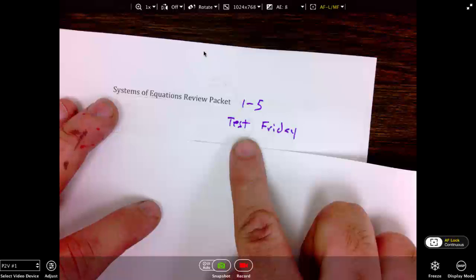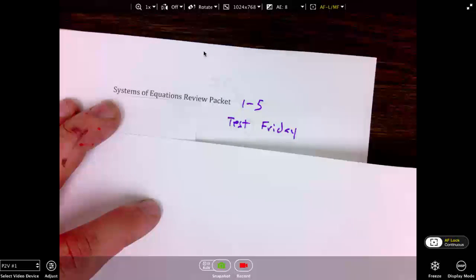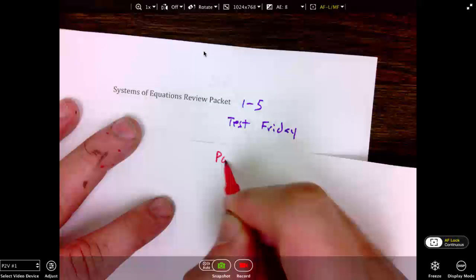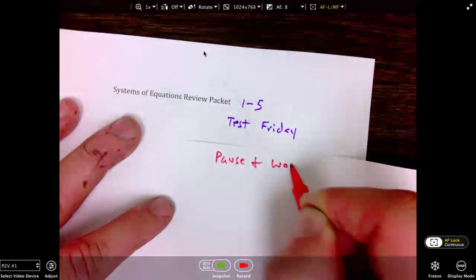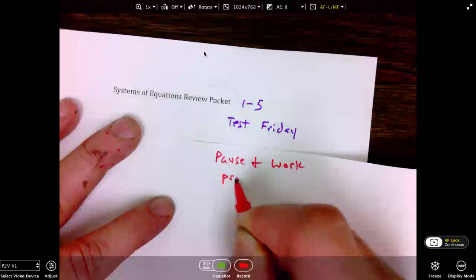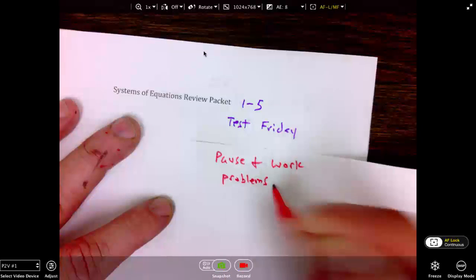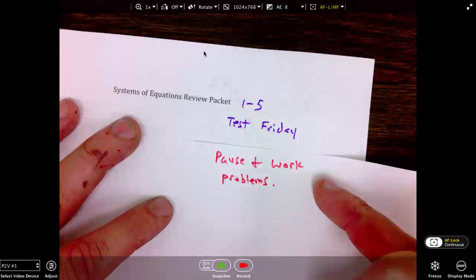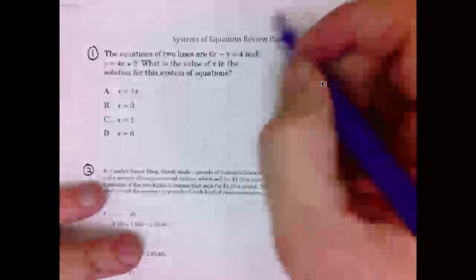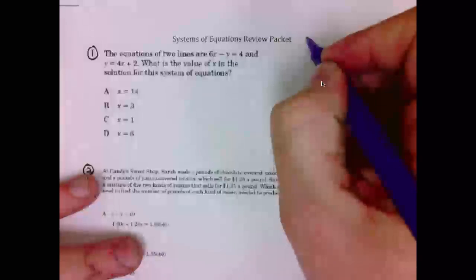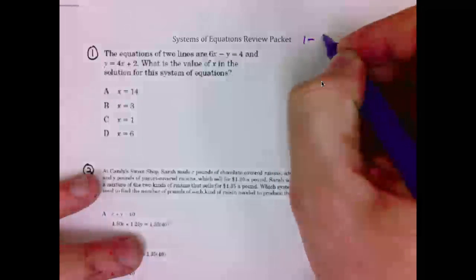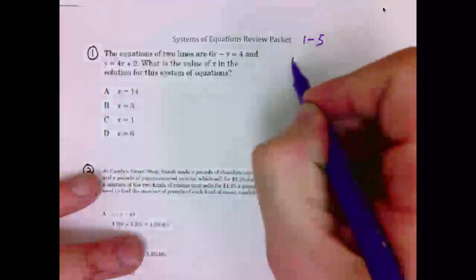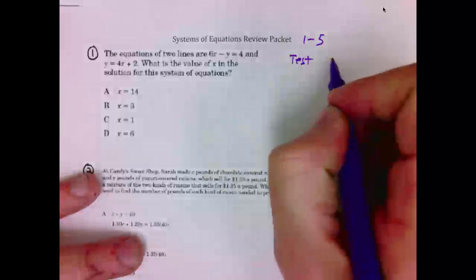Pause the video at this time and work the problems. Pause and work problems 1 through 5, then come back and view the video. We will be looking at our systems review packet. In this video we will look at problems 1 through 5. This will help us for our test that will be on Friday.